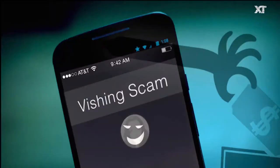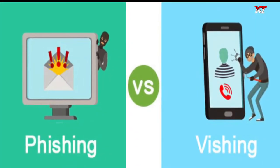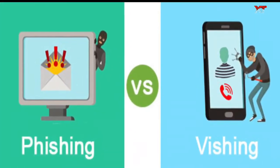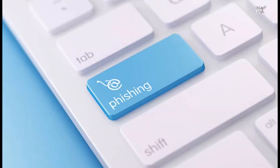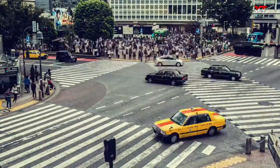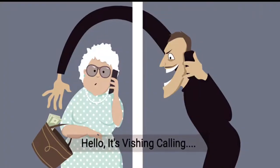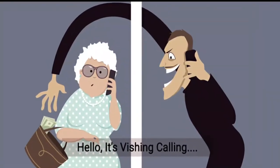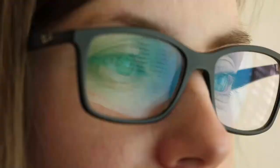So that is vishing. Now let's understand the difference between phishing and vishing. In phishing, the assault is done through email to a large number of people. While in vishing, the assault is done through voice communication to a large number of people.